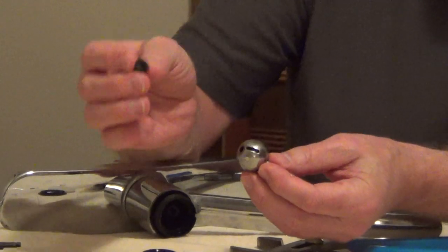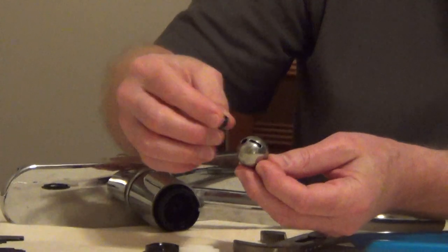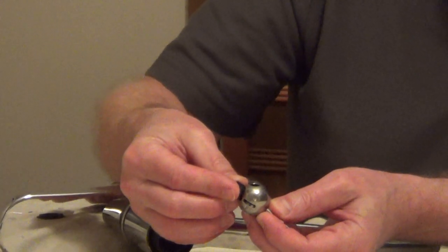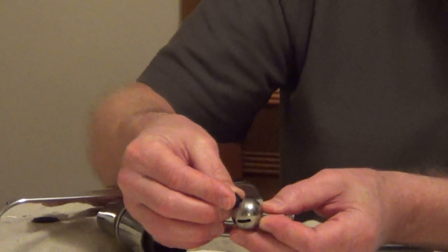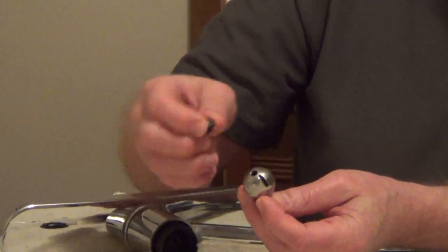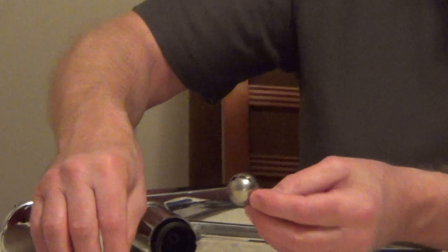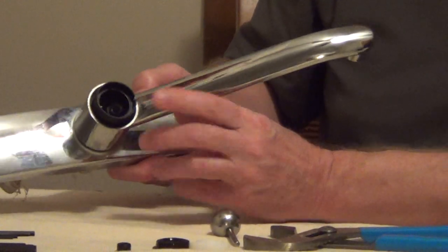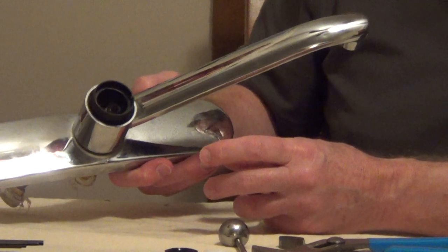If it's leaking out of the spout, the first thing you want to do is replace these seats. This pushes against the ball, and when it's flat against the metal, it turns the water off. When it moves to one of these holes, it allows water to flow. So if you have a leak out of the spout, remove the two seats, change them, and put it back together.